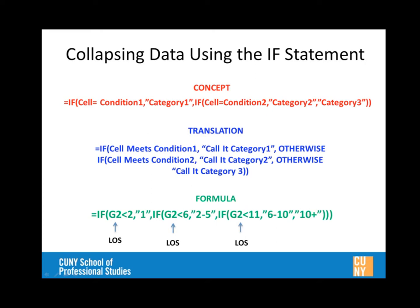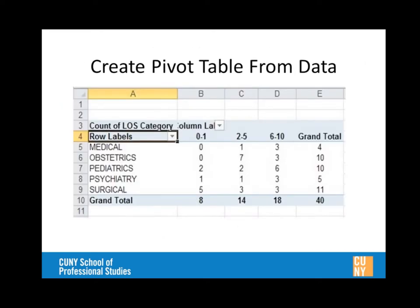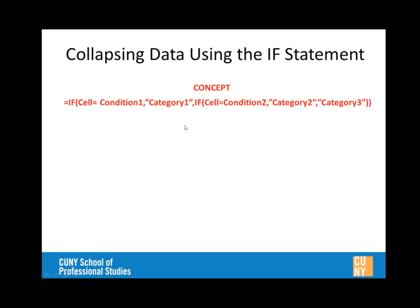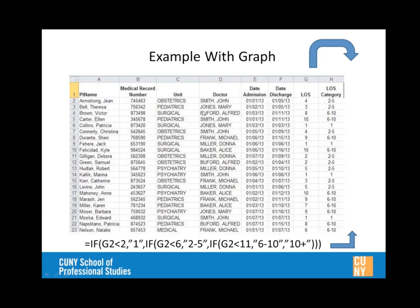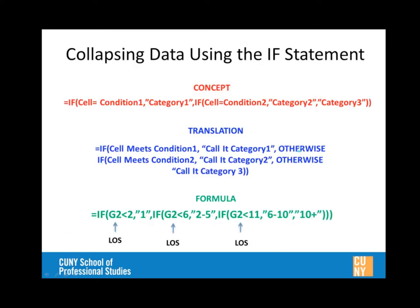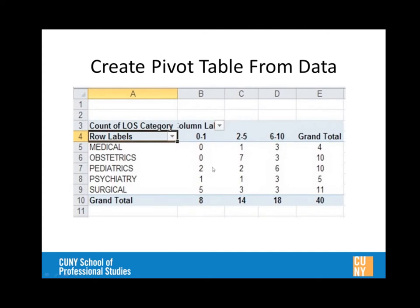Looking at the actual data, a pivot table has been created from the raw data. The pivot table groups information into discrete categories by length of stay categorization, the unit on which the patient received service, and the labels associated with their length of stay. Mike notices a minor inconsistency — it says 'zero through one' but should just say 'one' — and will correct that.